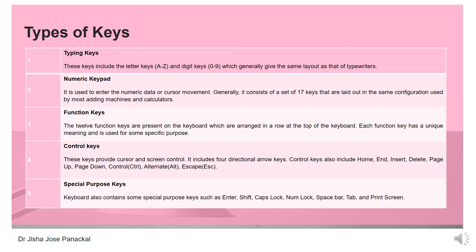If we are using an application such as billing, the numeric keypad will be very helpful. We have function keys — there are 12 function keys on the keyboard, arranged in the top row: F1, F2, F3, etc. Each key has a unique meaning and is used for some specific purpose. We also have control keys, which provide cursor and screen control. It includes four directional arrow keys. Control keys also include home, end, insert, delete, page up, page down, control, alternate, escape, etc. And there are special purpose keys including enter, shift, caps lock, num lock, spacebar, tab, and print screen.